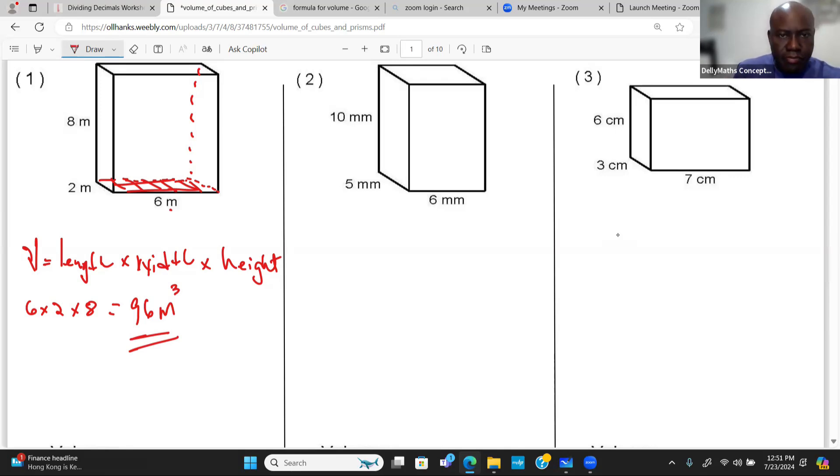All right, let's take a look at the second one. Number 2, what we have is a length of 6, the width is 5, the height is 10. Volume says that we're going to multiply the length times the width times the height. So this is going to give us 6 times 5 times 10, and this is going to leave us with 300 millimeter cube.